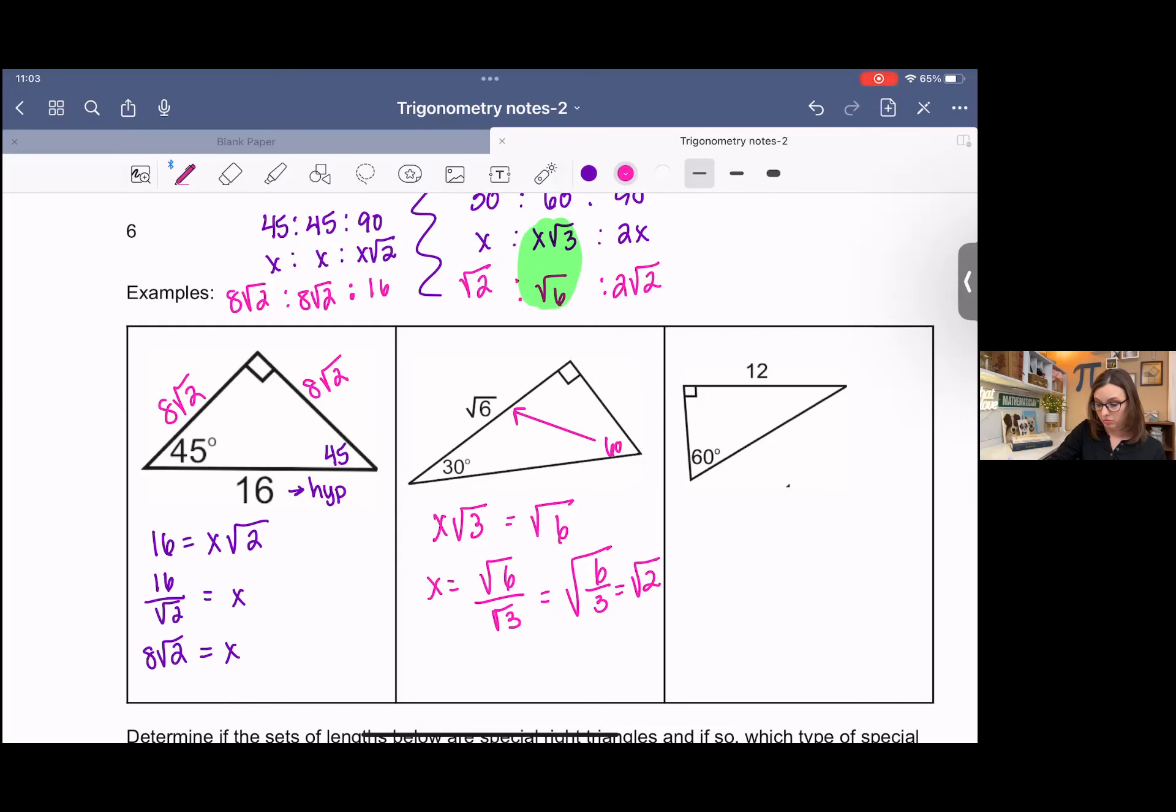So across from the 30 is square root 2. Across from the 90 is 2 root 2. And now we have all missing pieces of this triangle.